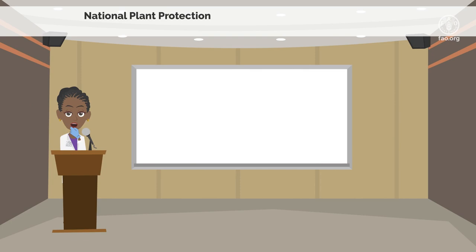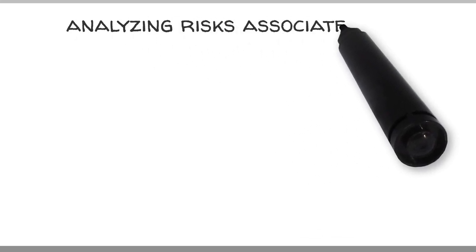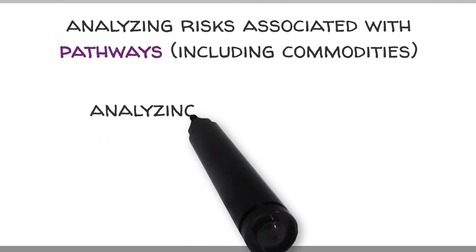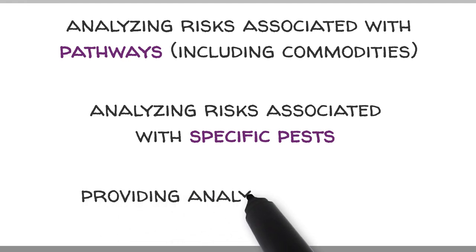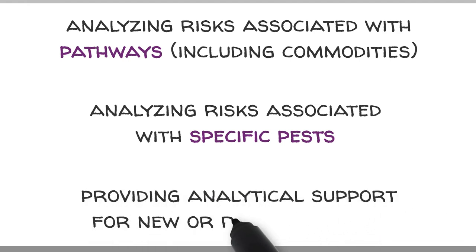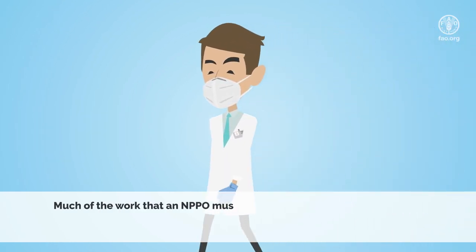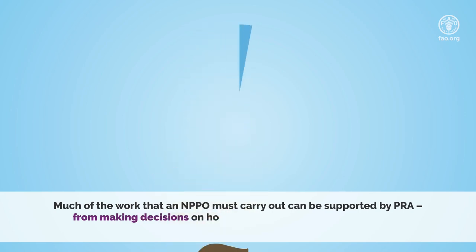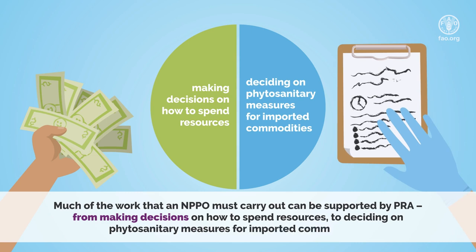National plant protection organizations use pest risk analysis for a variety of reasons: analyzing risks associated with pathways, including commodities; analyzing risks associated with specific pests; and providing analytical support for new or revised policies. Much of the work that a national plant protection organization must carry out can be supported by pest risk analysis, from making decisions on how to spend resources, to deciding on phytosanitary measures for imported commodities.